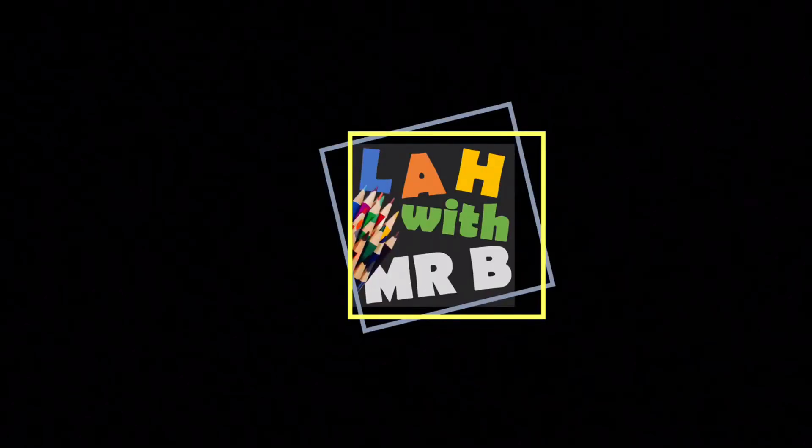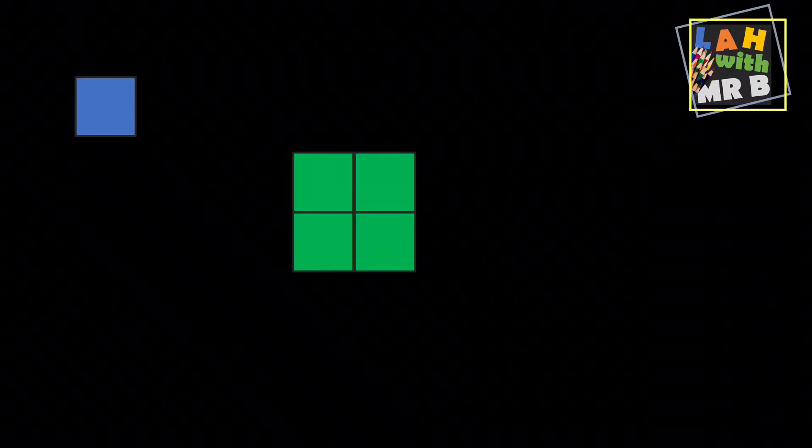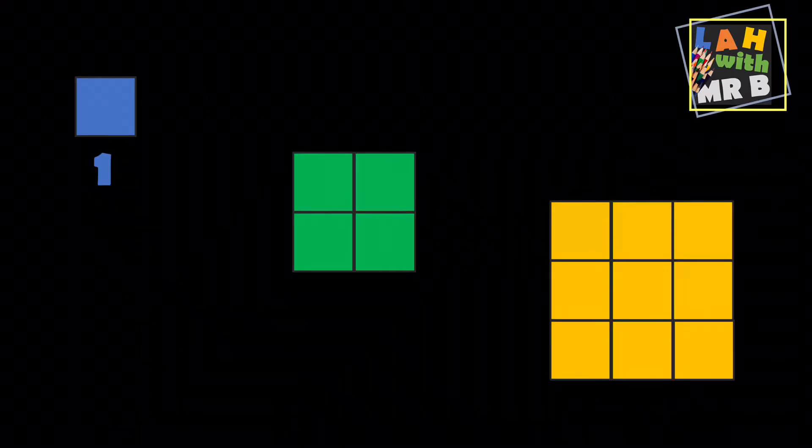So today we're learning about squared numbers and to help us we're going to use squares. Let's lay out the numbers one, four and nine. We can lay these numbers out nicely into perfect squares.